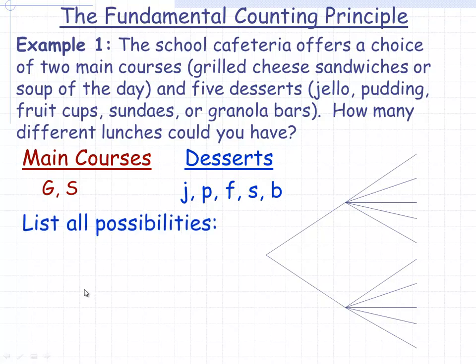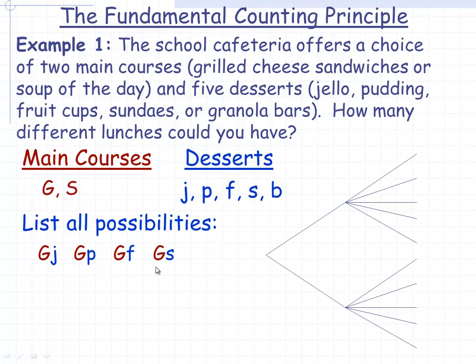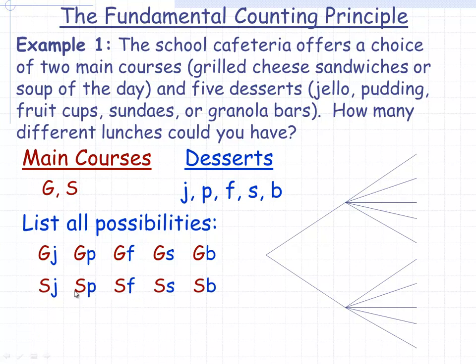We could just list all the possibilities. Having a grilled cheese sandwich and a Jell-O would look like this; grilled cheese and a pudding, grilled cheese and a fruit cup, grilled cheese and a sundae, grilled cheese and a granola bar. And then we could do soup of the day with each of them. Those are all the lunches that start with soup of the day, and if you count them, you notice that there are ten.